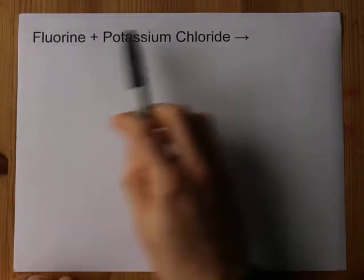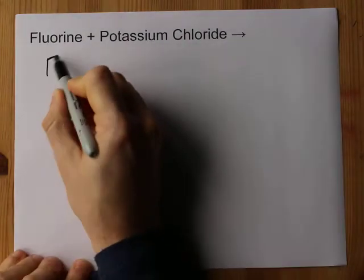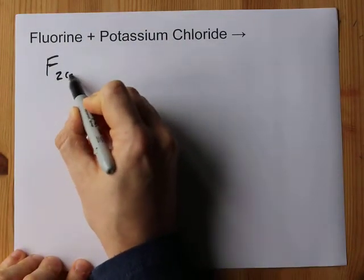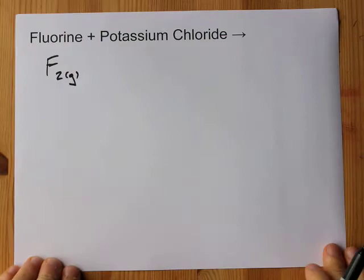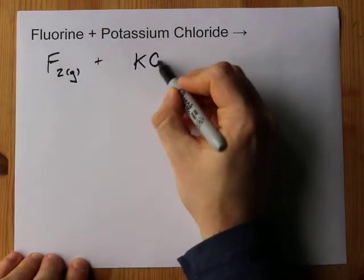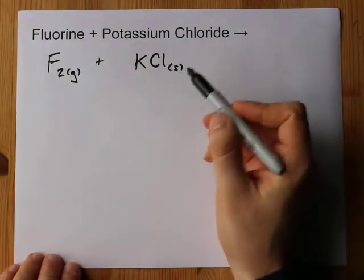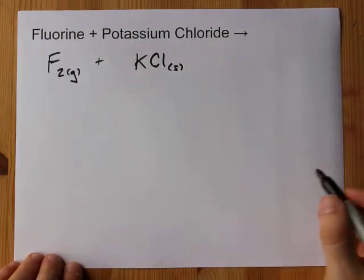What happens when you react fluorine with potassium chloride? Well, fluorine itself is F2, commonly found as a gas at room temperature, and potassium chloride is a solid at room temperature, although you can also find it dissolved in water. That would mean AQ here.